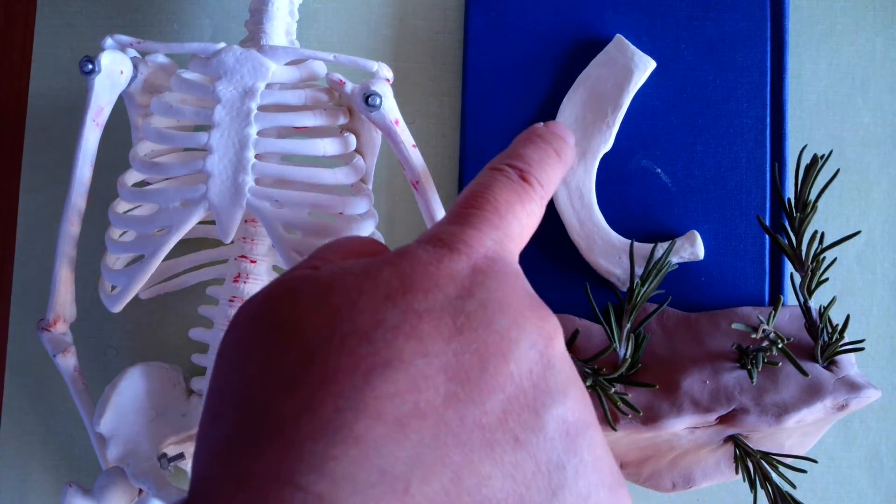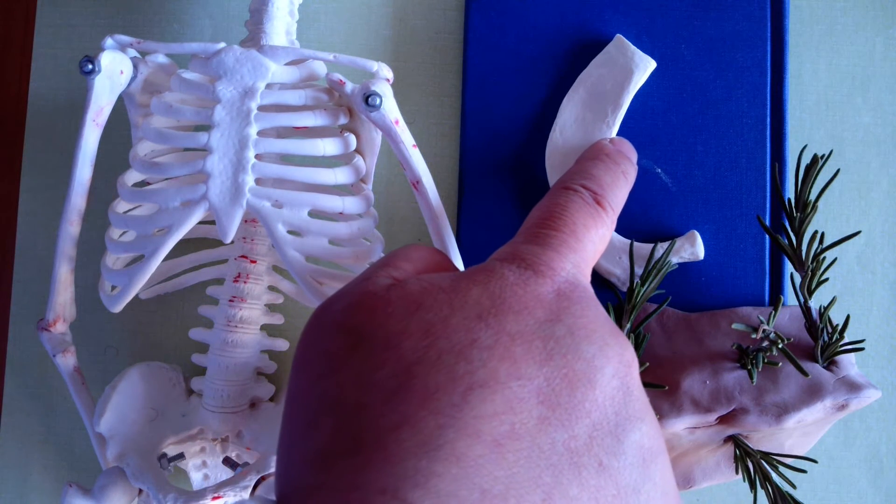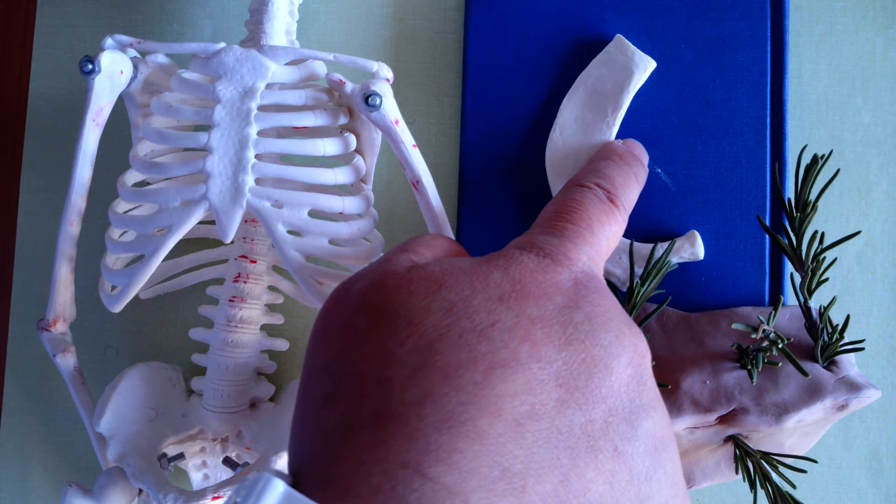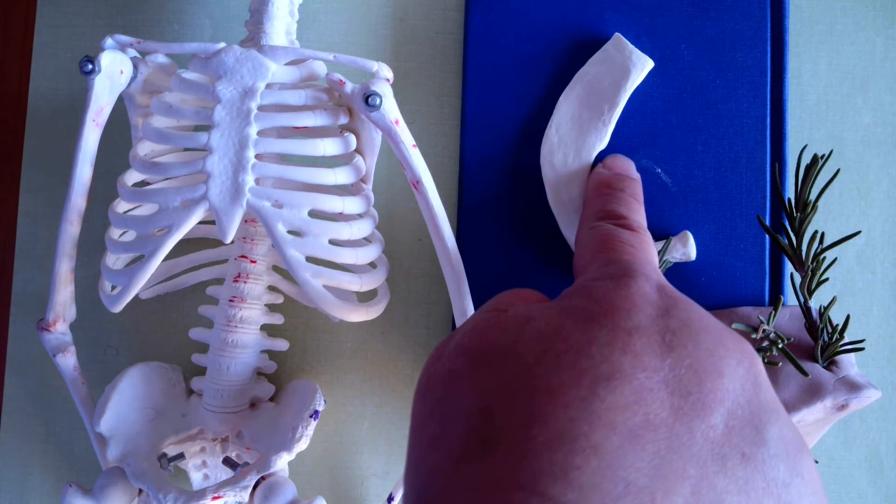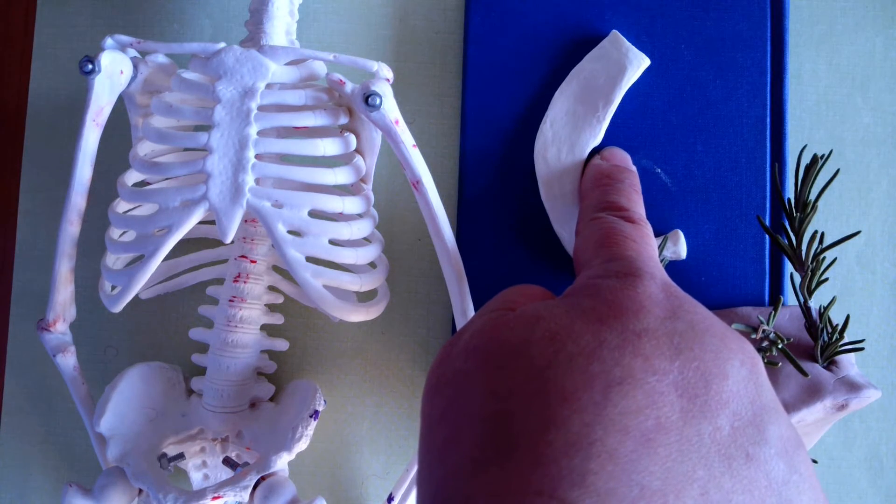So this is the slight ridge, which ends at the internal border as a tiny pointed projection called the scalene tubercle.